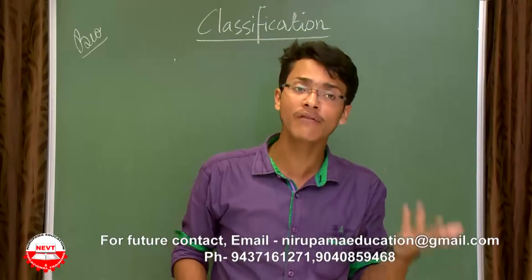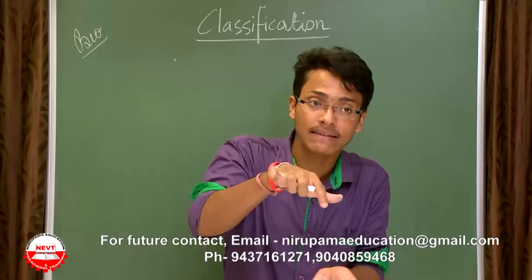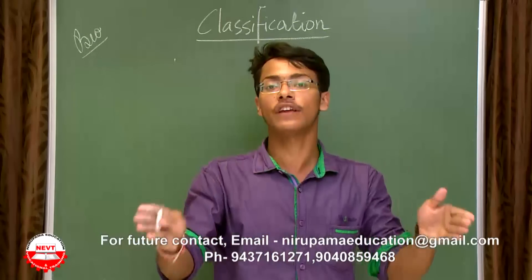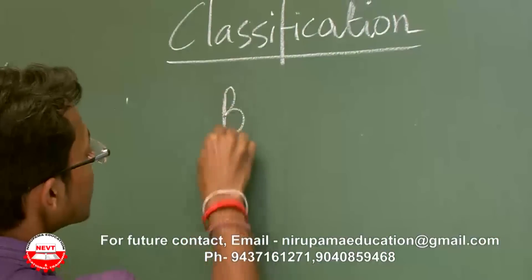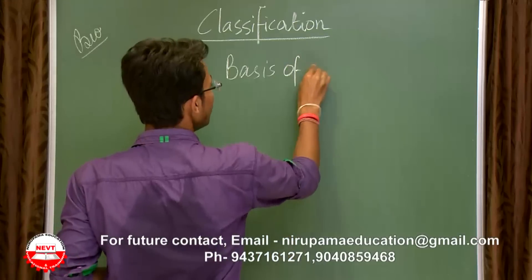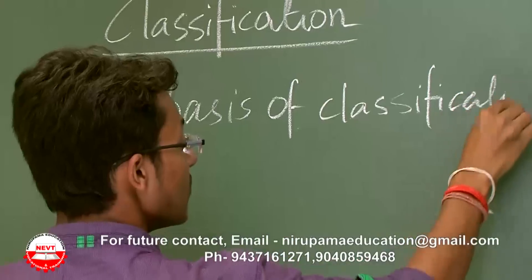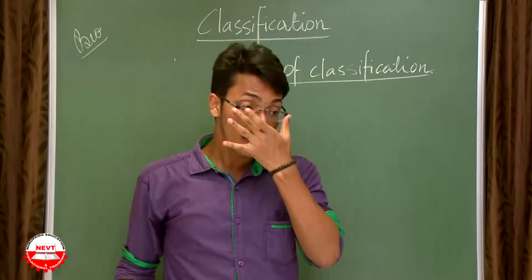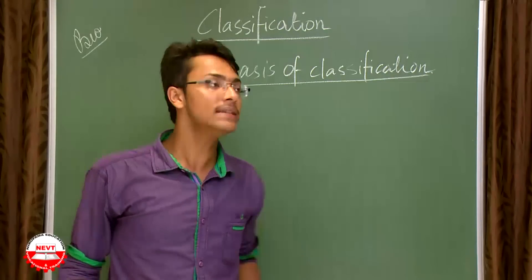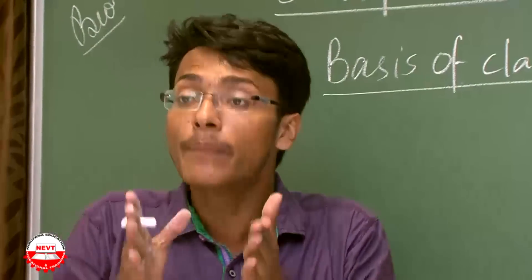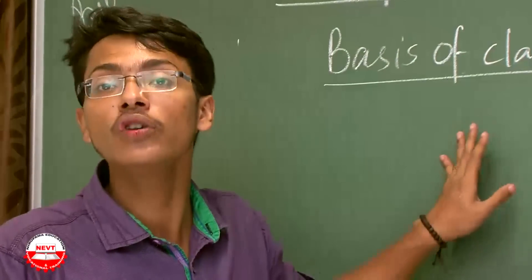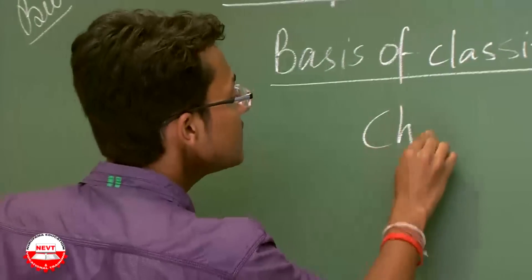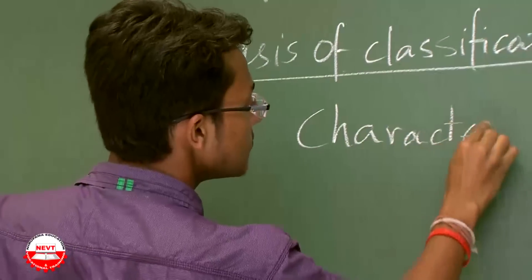Classification has to be done on the basis of something. As you heard in our previous classes, there must be some basic reason on the virtue of which classification is done. We have come across another term — basis of classification. There are some predefined criteria on the virtue of which this classification is done. That basis is called characteristics.